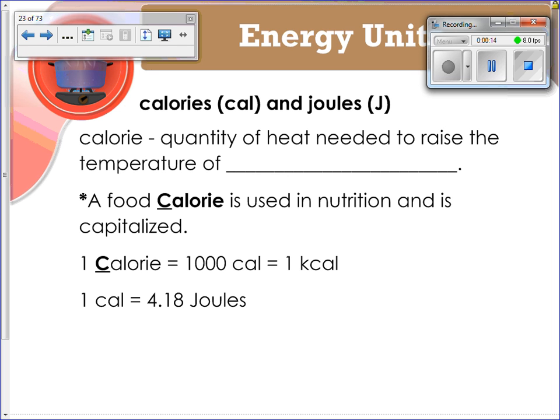The first thing we need to understand is the definition of a calorie. A calorie is the quantity of heat needed to raise the temperature of one gram of water by one degree Celsius. It's a little bit different than a food calorie, and we talked about this in our previous video. A food calorie with a capital C is used in nutrition and is equivalent to a thousand calories or one kilocalorie. One calorie equals 4.18 joules, and that number is also the specific heat of water.